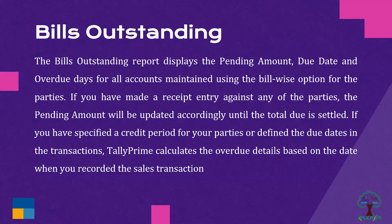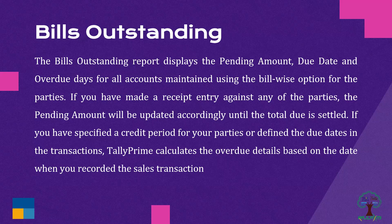In the Bill Outstanding report, you can see all bills using the bill-wise option — the pending amount, due date, or overdue days, party-wise too. If you have any bill against receivables, the pending amount will be shown accordingly. If you have mentioned a credit period or due date in transactions, Tally Prime will calculate the overdue details.